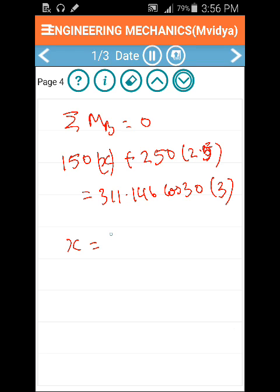So from here we get X is equal to 1.223 meters, is the distance for Q to act from point B to maintain equilibrium.